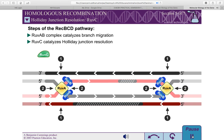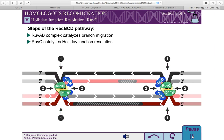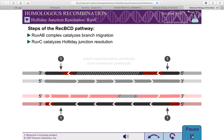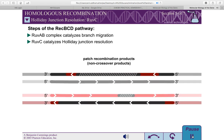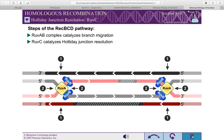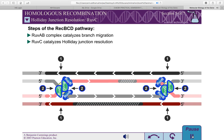If both junctions are cleaved in the same way, patch recombination products result. For example, if both junctions are cleaved at Site 1, patch recombination products result. Patch recombination products also result if both junctions are cleaved at Site 2.